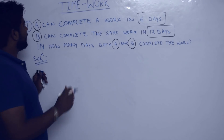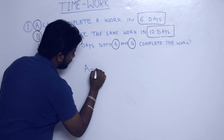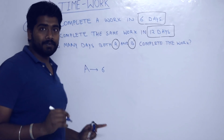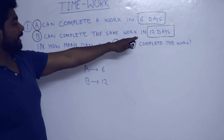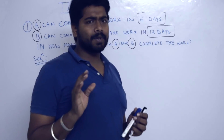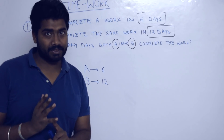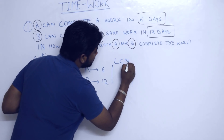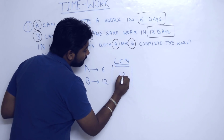Let's look at what is given in the question. A completes the work in 6 days, and B completes the same work in 12 days. The first step we are going to follow is to find the LCM of the two numbers 6 and 12. The LCM is 12.